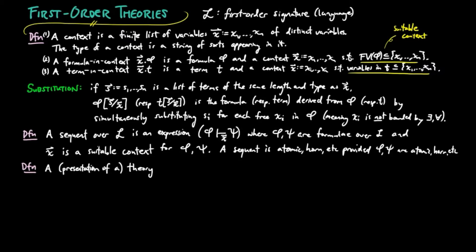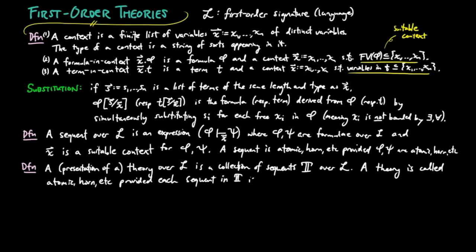Then a presentation of a theory over L is a collection of sequence over L. A presentation of a theory is called atomic, horn, etc., when each sequence in T is atomic, horn, etc.